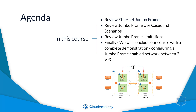The agenda for this course is as follows. We'll review what Jumbo Frames are. We'll review use cases and scenarios where Jumbo Frames will be useful. We'll review limitations of Jumbo Frames, highlighting invalid configurations such as internet traversing network paths. Finally, we'll conclude our course with a complete demonstration, configuring a Jumbo Frame-enabled network between two VPCs.